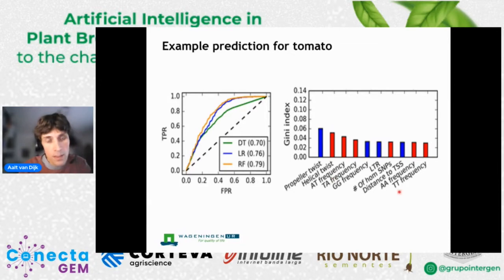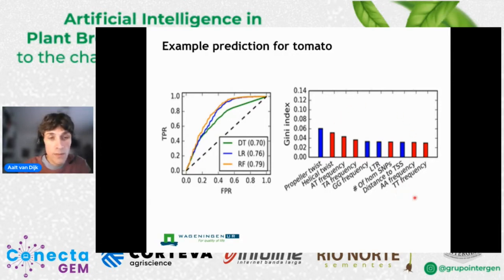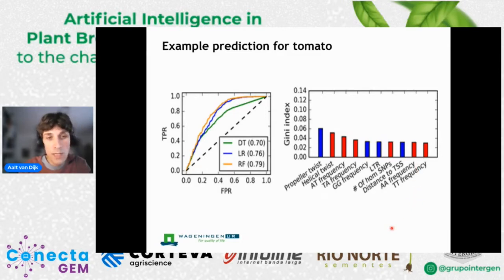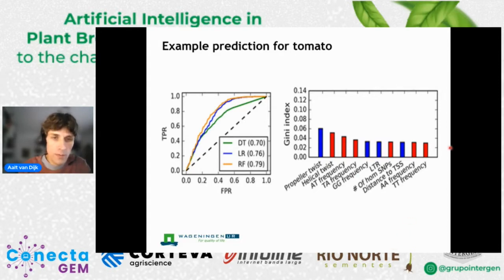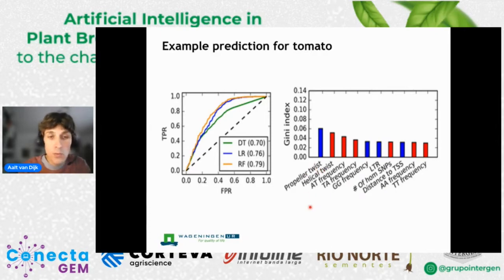In addition to the prediction itself, which has quite decent performance, we also looked at how does the model make its prediction. This is one key thing I want to stress: in some cases when people use machine learning they are maybe not so interested in why the model makes certain predictions. But I think in the application of machine learning to omics data in plants, you would often also try and use the model to learn more about your system. One way to do that is to look at which features are really important for the model. The top features here include propeller twist and helical twist — aspects related to DNA structure — which was quite an interesting finding.